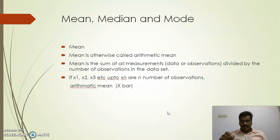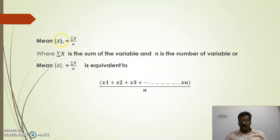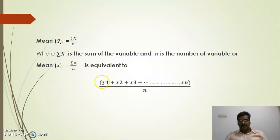If x1, x2, x3, and so on up to xn are n number of observations, the arithmetic mean, or x-bar, is calculated by adding all the variables and then dividing by the total number of observations. Here, sigma x represents the sum of variables, x-bar represents the mean, x1, x2, x3 are the different observations, and n is the total number of observations.